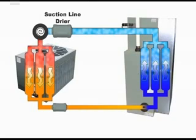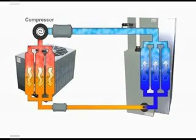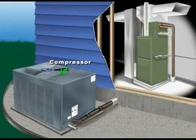The purpose of the dryer is to act as a filter and remove any moisture and contaminants that may be in the refrigerant. Once the refrigerant passes through the dryer, it enters the compressor.